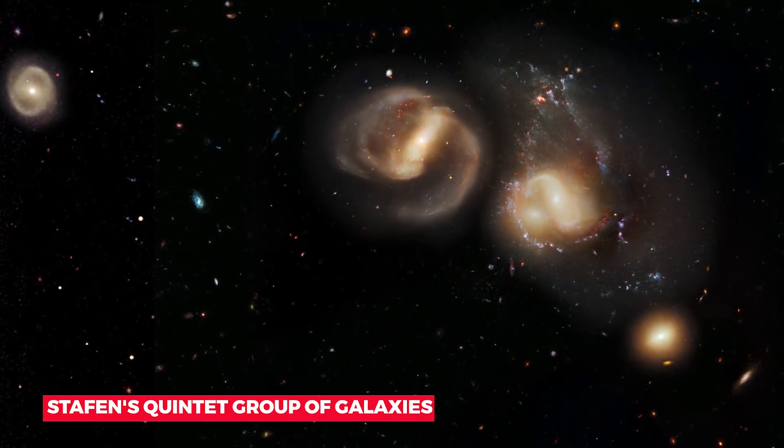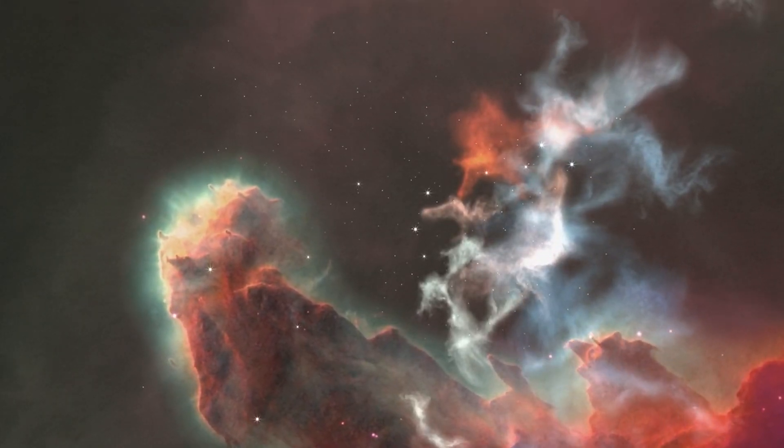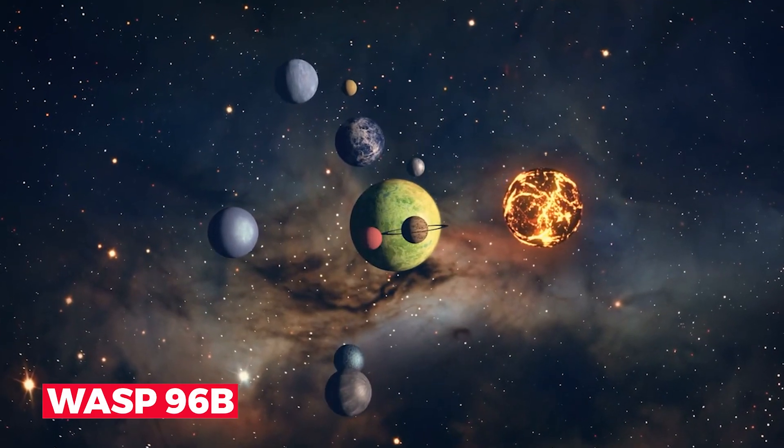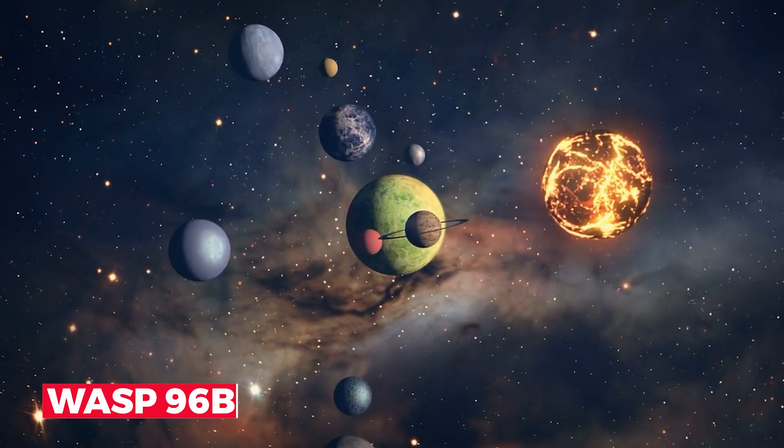The three photographs exhibit Stephen's Quintet group of galaxies, the Southern Ring Nebula, and the Carina Nebula. The spectra of Wasp 96b, a giant gas exoplanet, is the fourth objective.